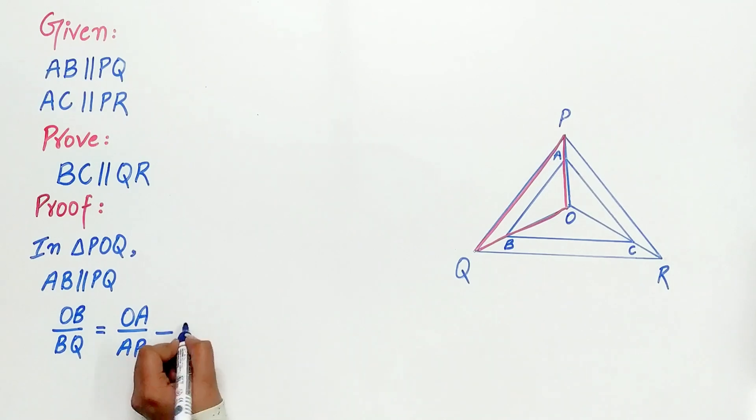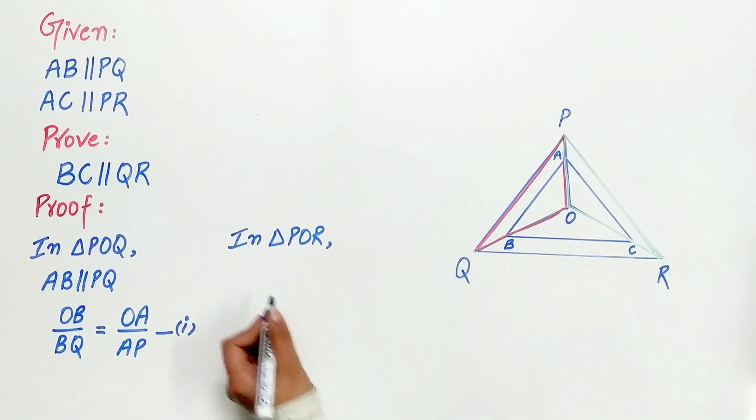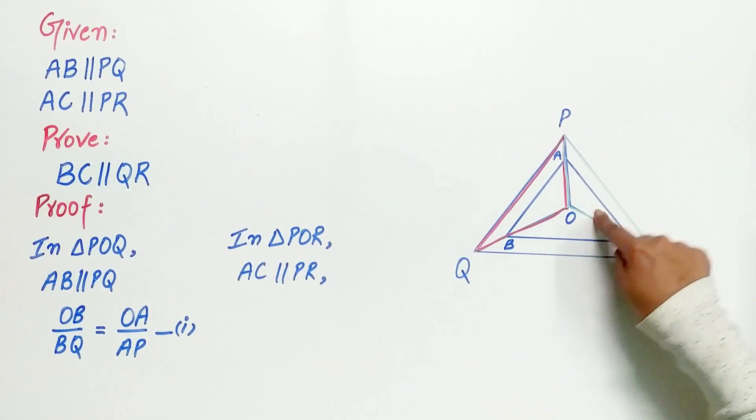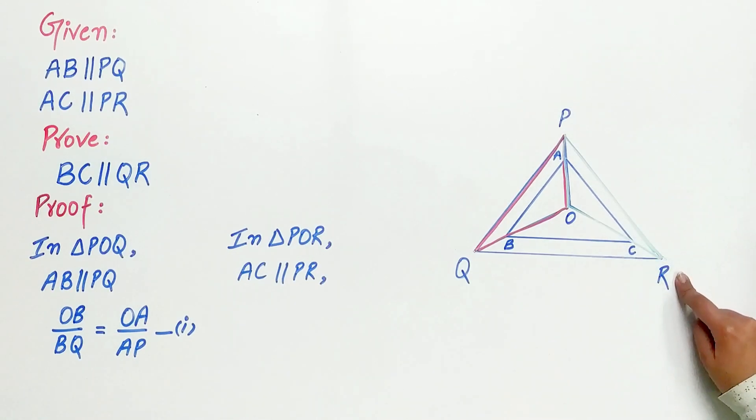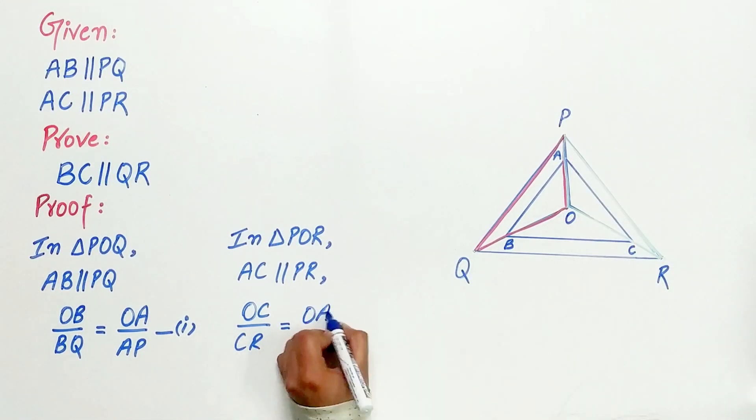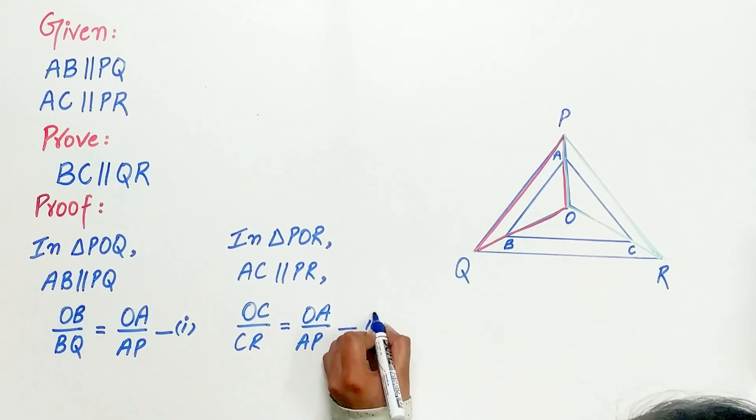In triangle POR, AC is parallel to PR. AC is a line parallel to one side of the triangle. Hence, by Theorem 6.1, OC/CR equals OA/AP. Let's mark this as equation 2.